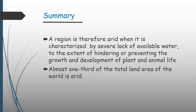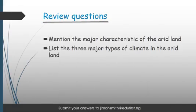In summary, a region is therefore arid when it is characterized by a severe lack of available water, to the extent of hindering or preventing the growth and development of plants and animal life. Almost one third of the total land area of the world is arid.